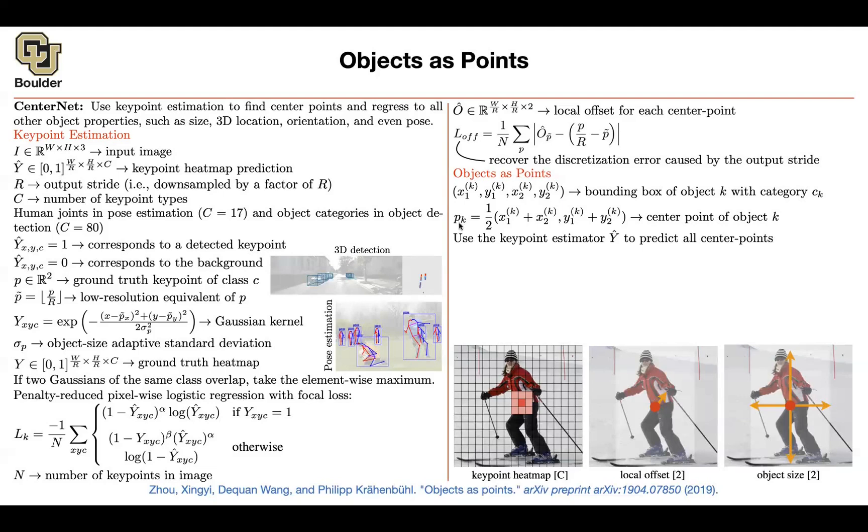Now this P is exactly what you're going to use here to give you the key points that you want to estimate. And therefore you're finding your centers by solving a regression problem, by solving this loss function. What else do you need? You need to know the width and the height of this box. You know the corresponding ground truth.